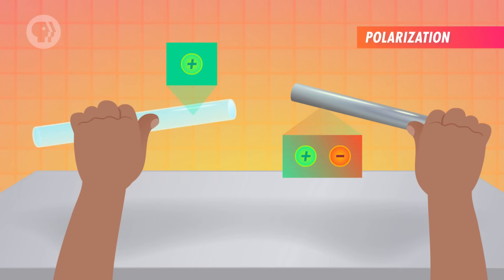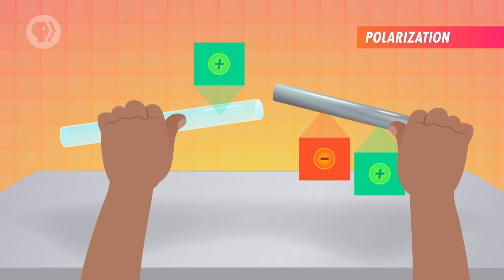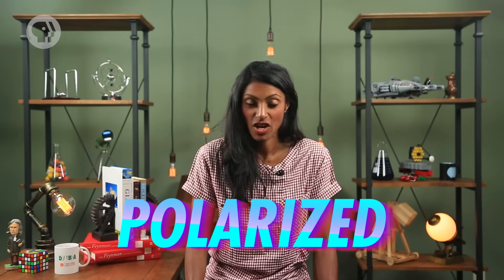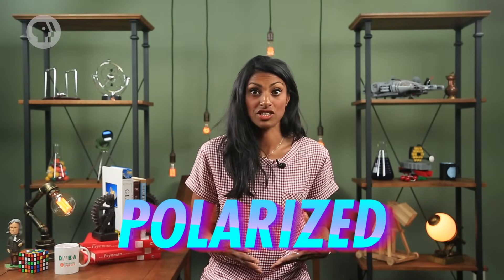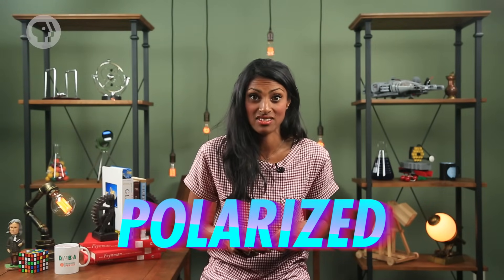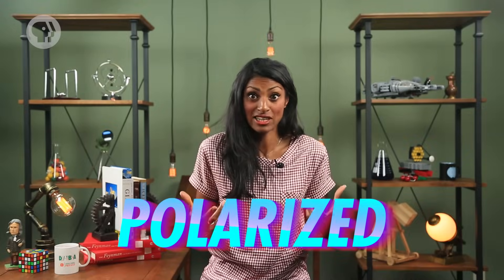Charges can move when different materials touch each other, either through friction or simple contact. But materials don't actually have to touch in order for their electrons to get rearranged. Say you bring a positively charged rod close to a metal conductive rod. Then the electrons in part of the metal rod will be drawn towards the positive rod. The side with more electrons has a negative charge, leaving the other side of the rod with fewer electrons and a positive charge. We've polarized the metal rod – redistributed the charge to create an imbalance of charge within an object that's still electrically neutral.